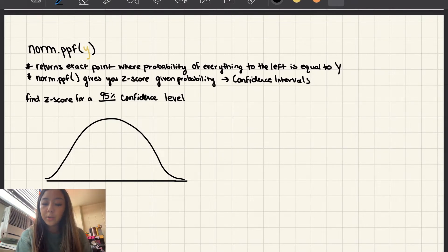So here I just have a couple notes. The function norm.ppf will return the exact point where the probability of everything to the left of that point is equal to y, and y is just what you're plugging into the function between the parentheses. It's going to be a probability number.